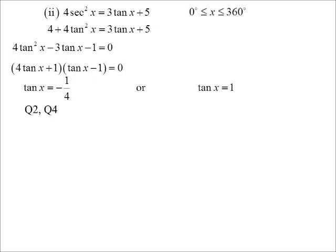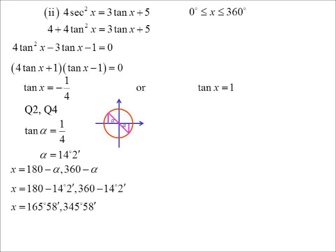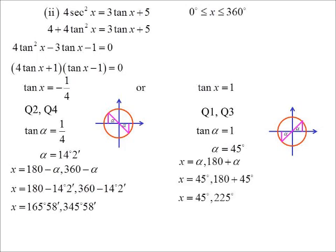So first one is negative, so quadrants 2 or 4. Locate the acute angle, and then work out the two possibilities there. Tan x equals 1, that's one of our exact values. First and third quadrants. Acute angle is 45. And then we just combine all our answers.